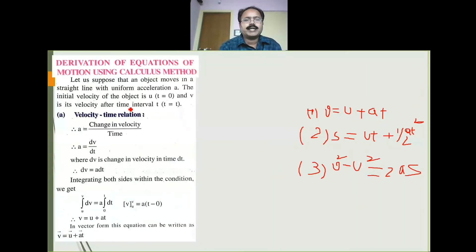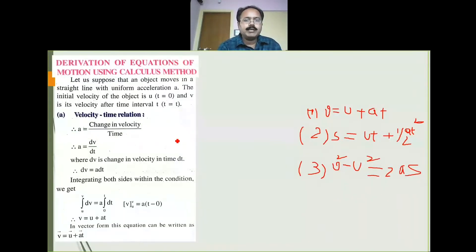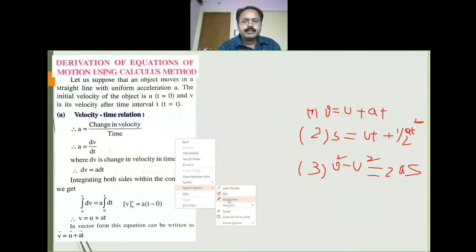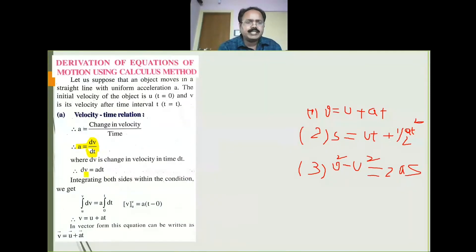How do we derive these equations using the calculus method? For the first one, what is the acceleration definition? Acceleration is nothing but rate of change of velocity — change in velocity over time. So a is equal to dv by dt. Therefore, dv is equal to a into dt. Now integrate on both sides — performing definite integrals: integral dv is equal to a into integral dt.